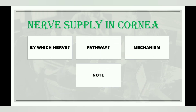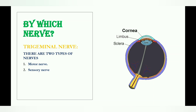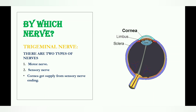We will learn about which nerve supplies the cornea, the pathway by which the nerve gets applied to the cornea, and the mechanism behind it. Starting with the nerve name: the trigeminal nerve is responsible for the nerve supply of the cornea. As you know, there are two types of nerves — motor nerve and sensory nerve. The trigeminal nerve is a sensory nerve which supplies the cornea.